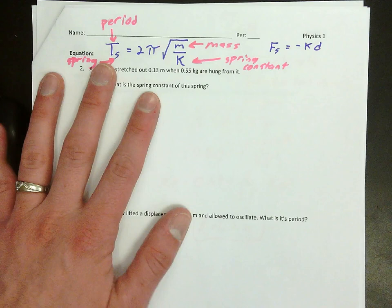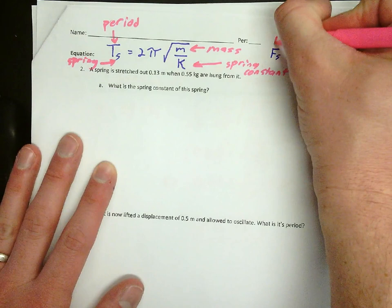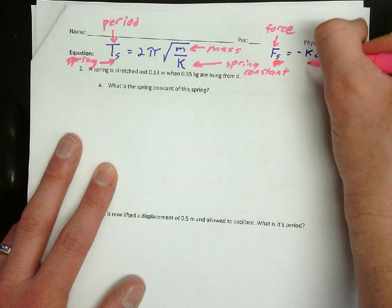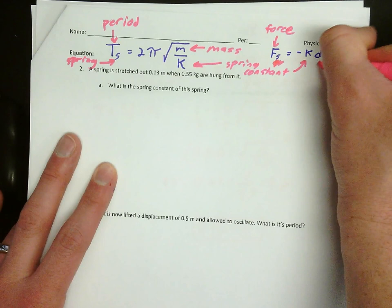F, by the way, is force, just as a reminder. The S, once again, stands for spring. The K is, once again, spring constant. And the D is displacement.